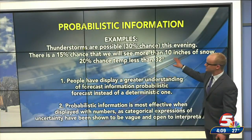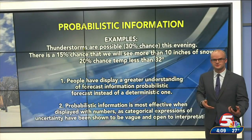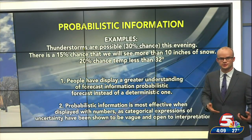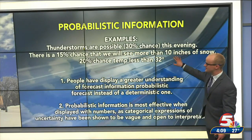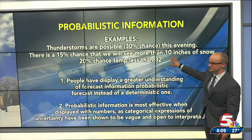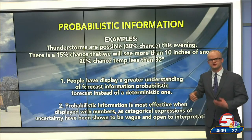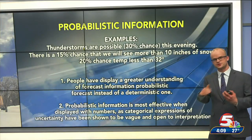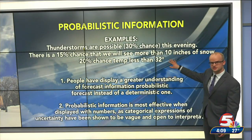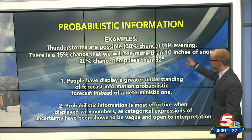Probabilistic information can be used with those percentages that we see a lot of times with chances of thunderstorms or precipitation in the summertime. You could also say that there's a 15% chance we could see more than 10 inches of snow — that's called a threshold probability, meaning the percentage chance that you could see more than a certain amount.